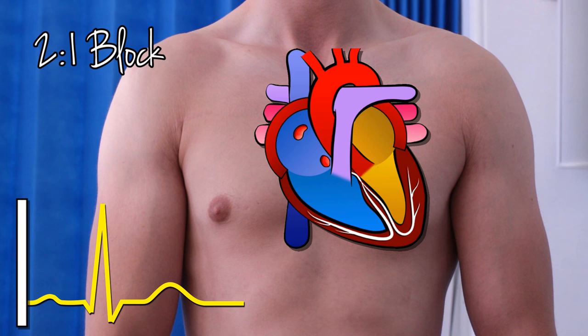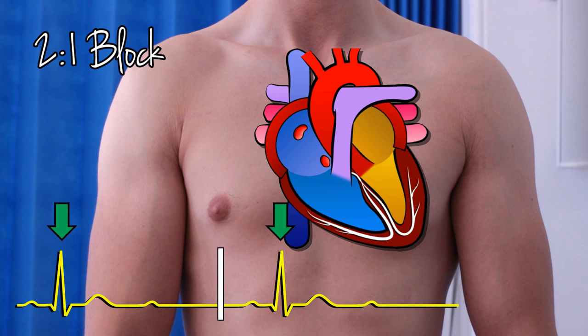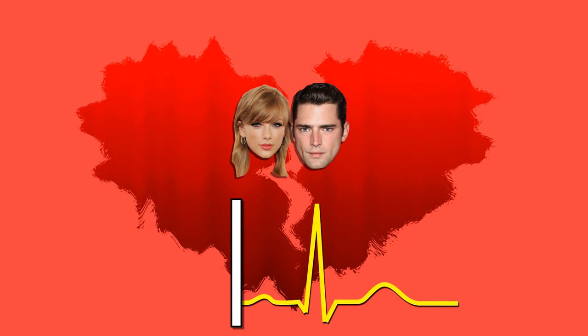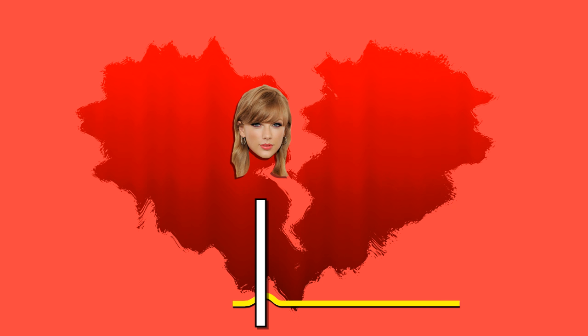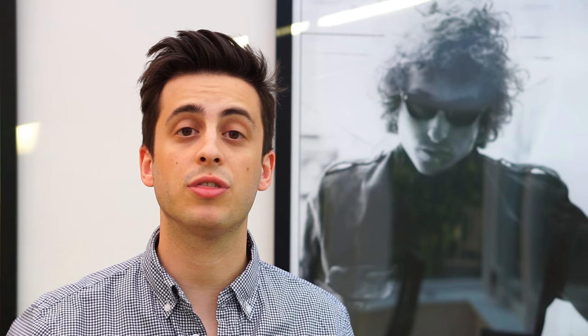The final group is 2 to 1 block. Fortunately, this does exactly what it says on the tin. For every two atrial impulses, only one is conducted through to the ventricles. For every two P-waves, there is only one QRS complex. You could say that counts as the on-again, off-again relationship.